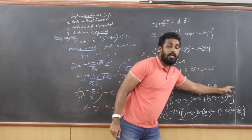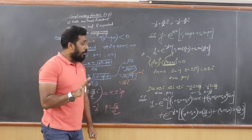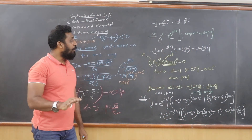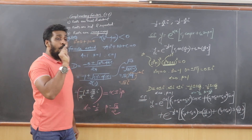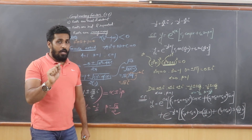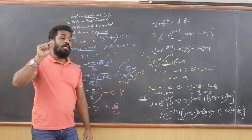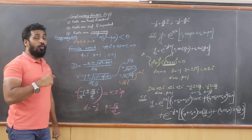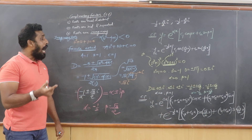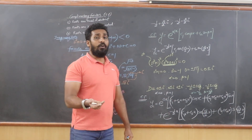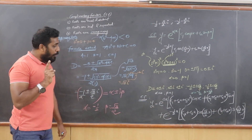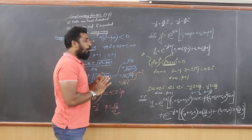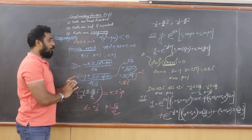This entire complementary function contains 10 different constants: C1 through C10. The golden rule is: whatever the highest power of D you get, that many constants must be present in your complementary function. Whenever roots repeat, use C1 + C2x + C3x² and so on — whether roots are real or imaginary — according to their respective formulas.